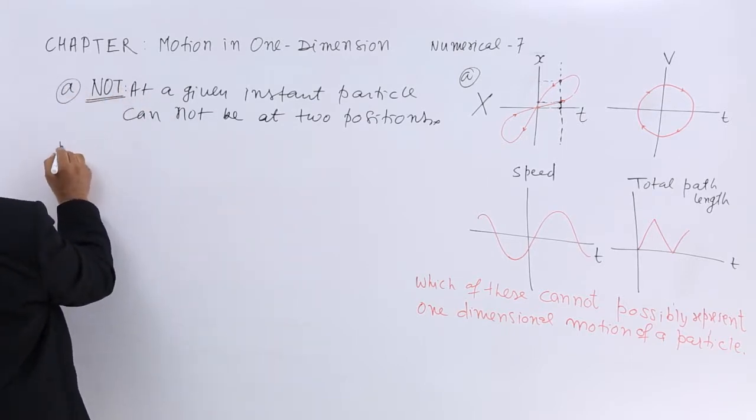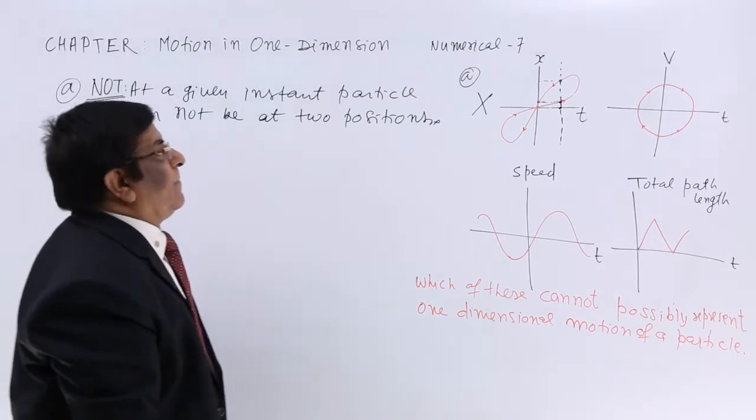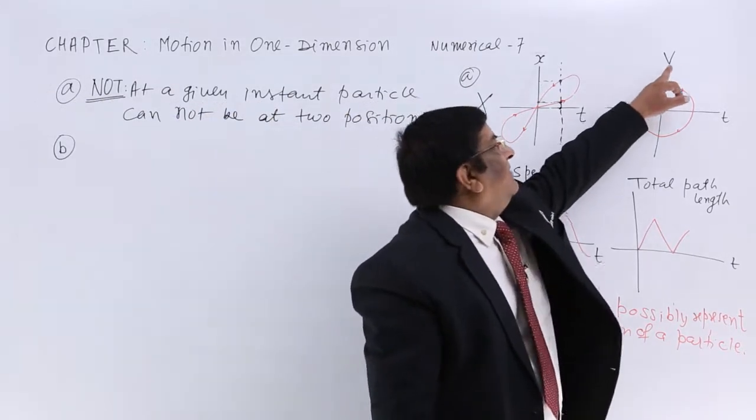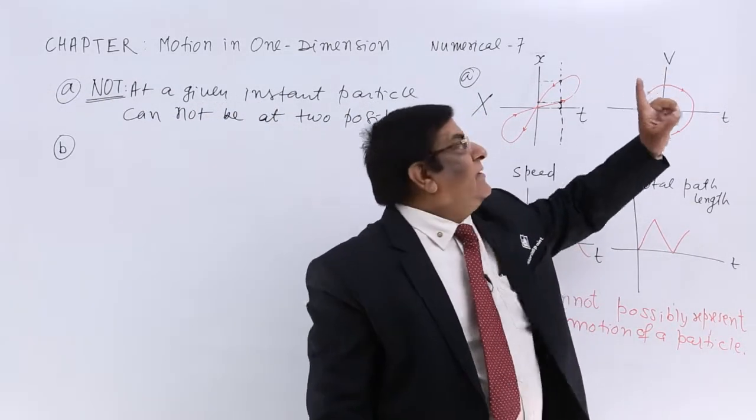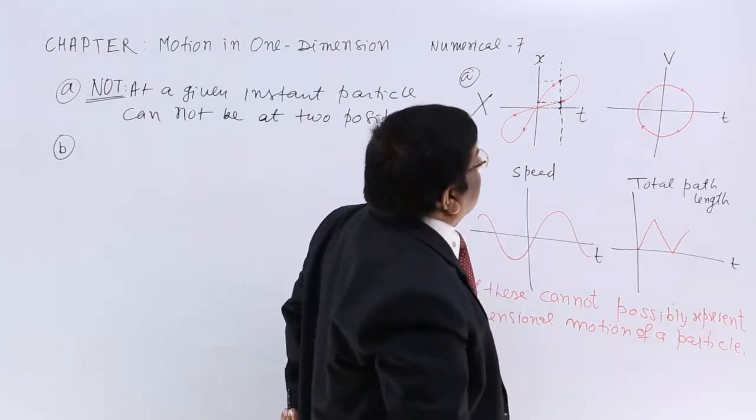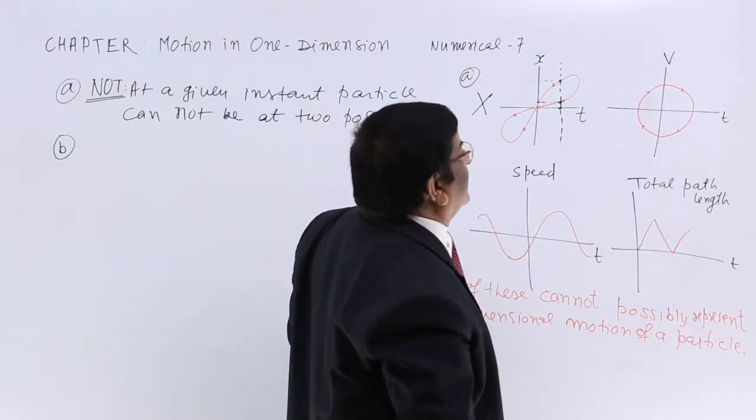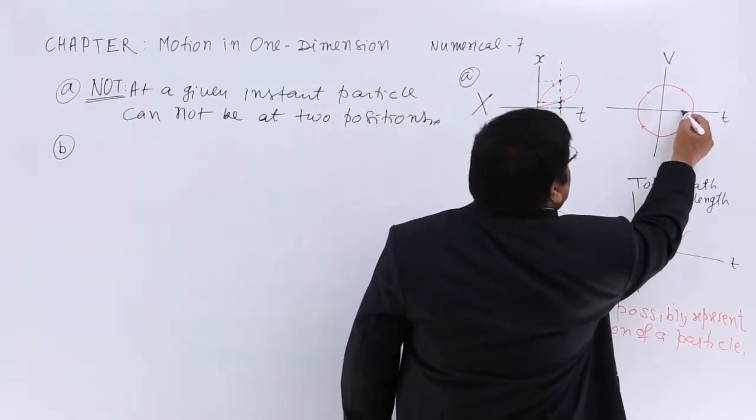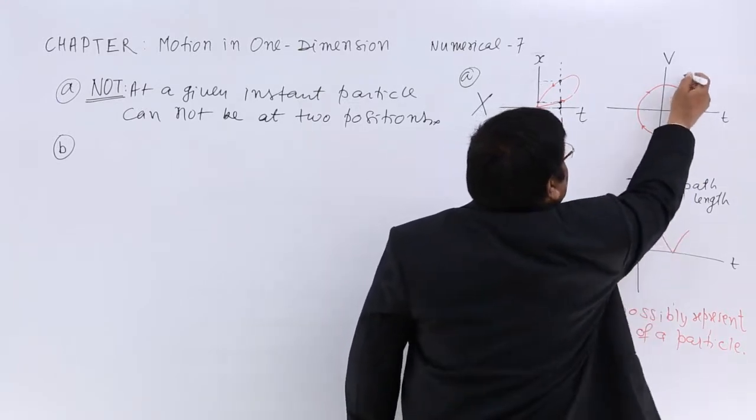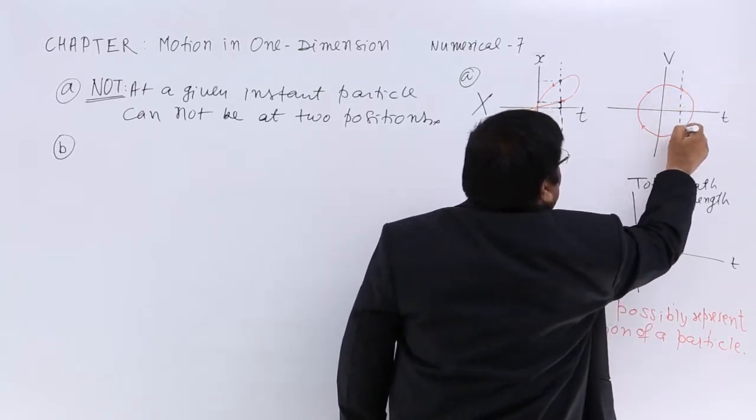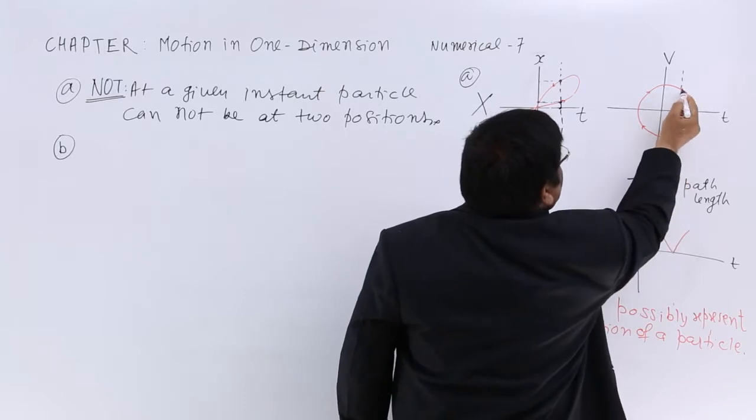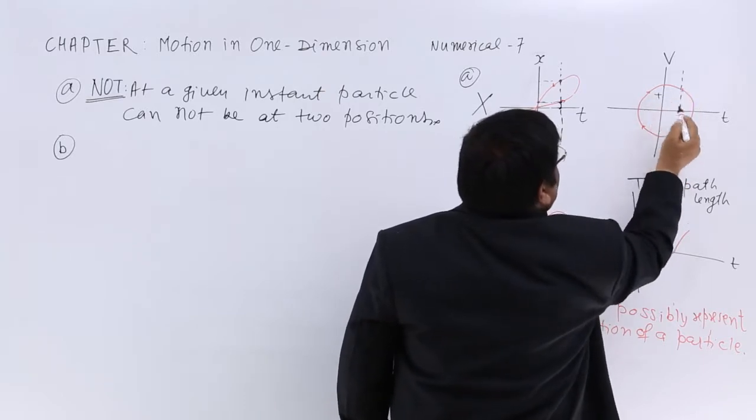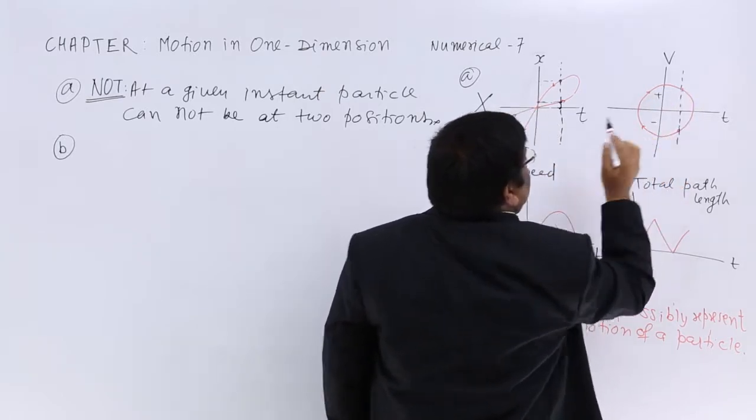Now we come to question B. B is a graph between velocity and time. This says that again at a particular time, at this time, what is the velocity? So at this time this says the velocity is positive, this says the velocity is negative.